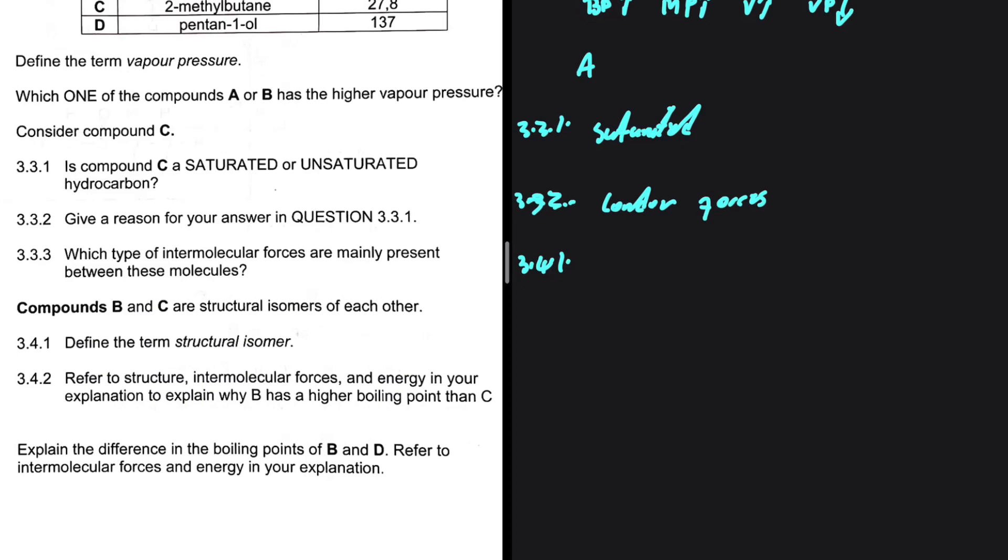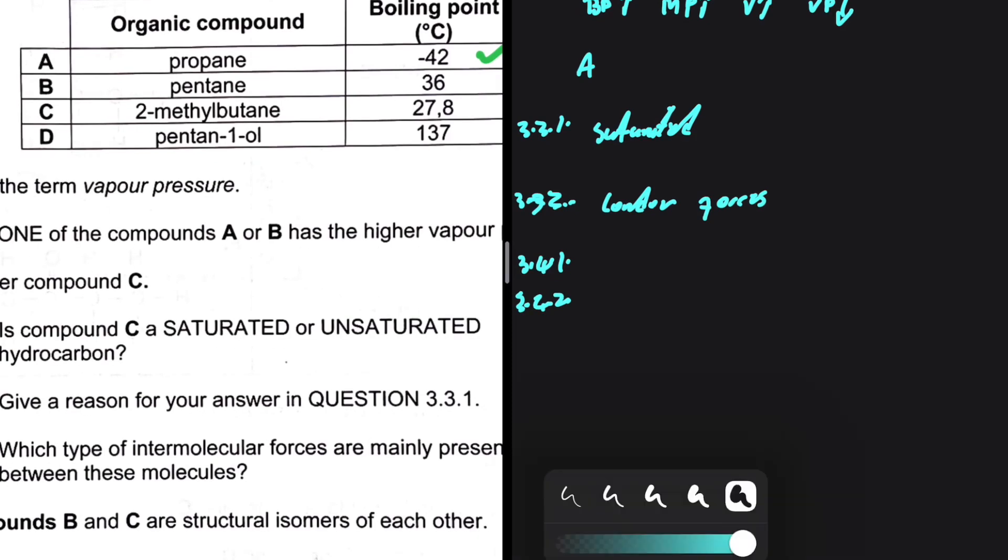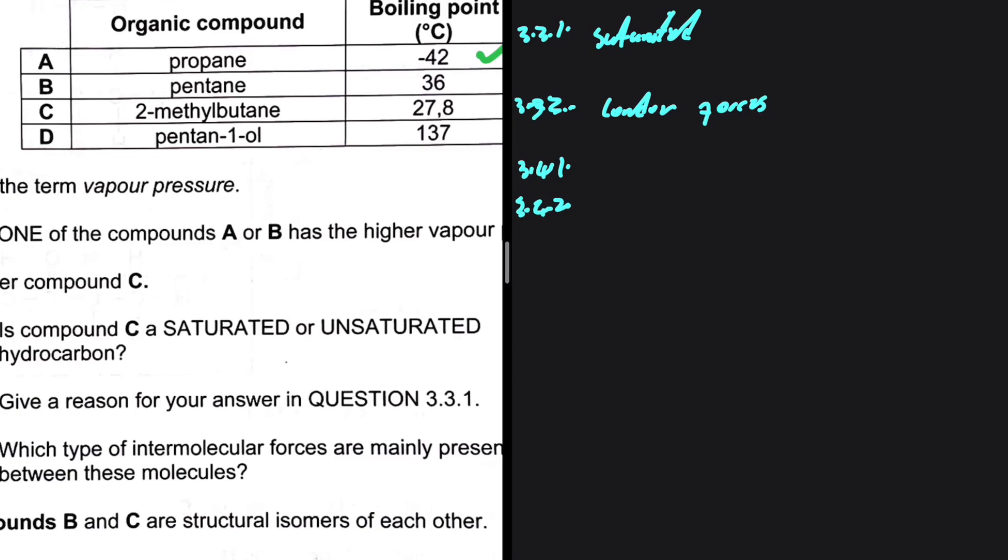Refer to the structure, intermolecular forces, and energy in your explanation to explain why compound B has a higher boiling point than compound C. Let's go ahead and have a sketch of compound B. Five carbons in a straight line. So 1, 2, 3, 4, 5.